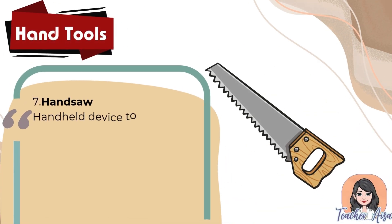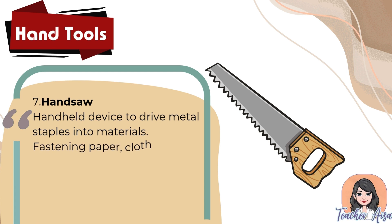Seven: hand saw — a handheld device used to drive metal staples into materials, fastening paper, cloth, or other materials together.